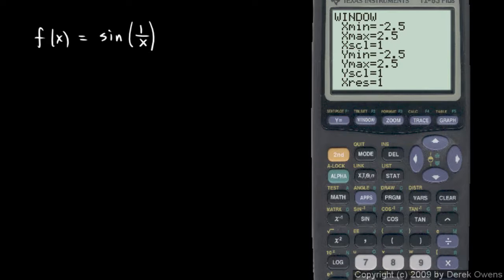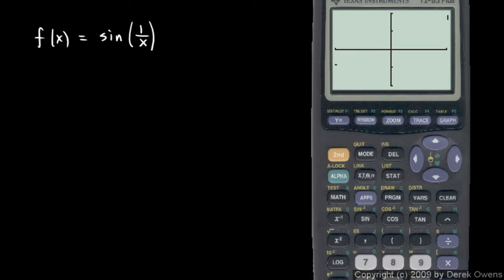I'm going to go to window and zoom in pretty tight. Instead of x equals negative 0.25, I'm going to say negative 1, and x max is 1. Then the y minimum, let's go from negative 2 to a y maximum of 2. Zoom in just a little bit there and hit graph.